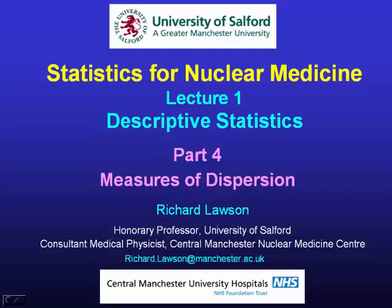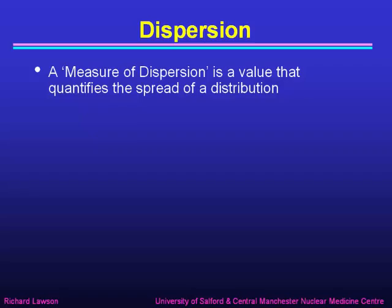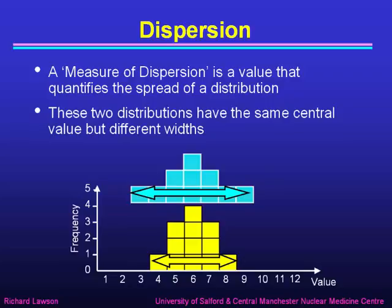This is the fourth part of my lecture on descriptive statistics, in which I'm going to be talking about measures of dispersion. A measure of dispersion is a value that quantifies the spread of a distribution, or the width, how broad it is. Here are two distributions that have the same central value but different widths. The blue distribution has a much greater spread than the yellow distribution, so although they've got the same mode and the same mean, the spread of values is greater for the blue one. That's what we mean by dispersion.